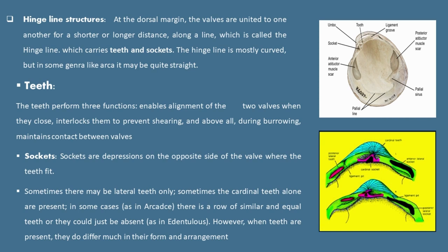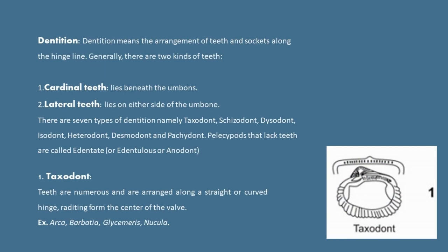However, when teeth are present, they do differ much in their form and arrangement. Now we will discuss about dentition. Dentition means the arrangement of teeth and sockets along the hinge line. Generally, there are two kinds of teeth: cardinal teeth, which lie beneath the umbo, and lateral teeth, which lie on either side of the umbo. Besides these two kinds of teeth, there are seven types of dentition.